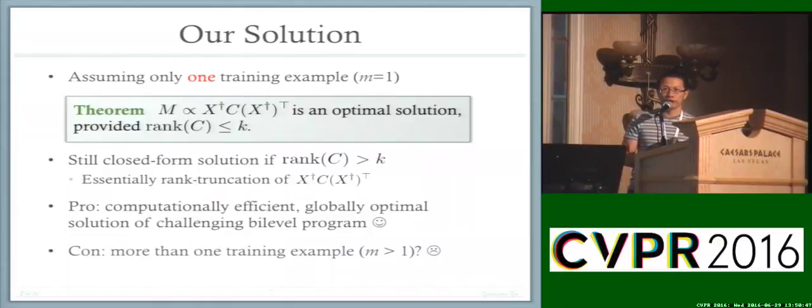Our work provides a very simple solution to this problem. The observation is, first, assuming there is only one training pair—I know this is unrealistic, but bear with me. Assuming there's only one training example, we can show that the bilevel programming has an exact closed-form solution. Even though it's non-convex, we can prove there's a closed-form solution, provided k is upper bounded by the rank of the ground truth.